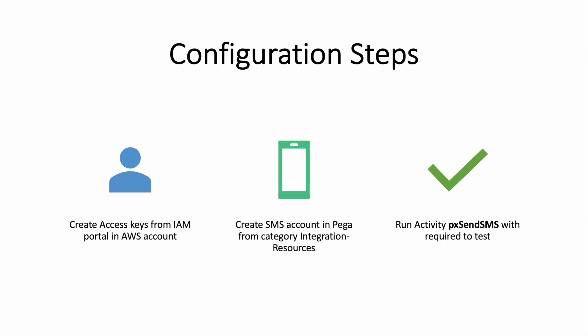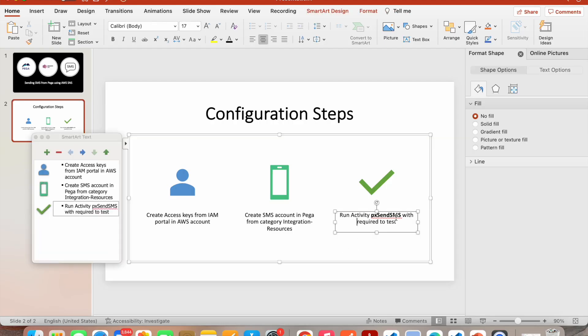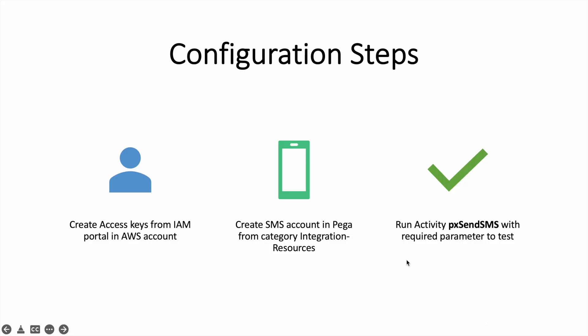In Pega, we need to create an SMS account under the category Integrations Resources. Pega also provides an out-of-the-box activity called pxSendSMS with required parameters to test. We just need to pass the required parameters to run it.